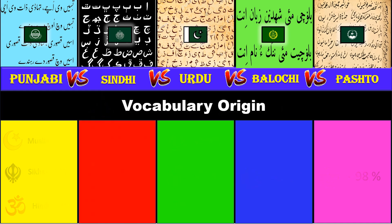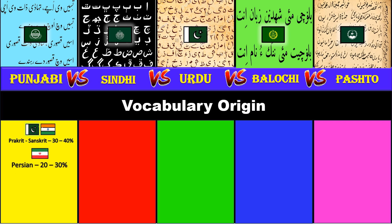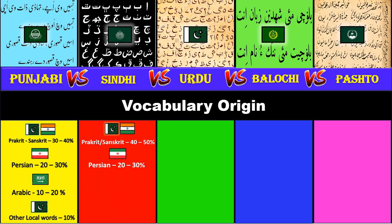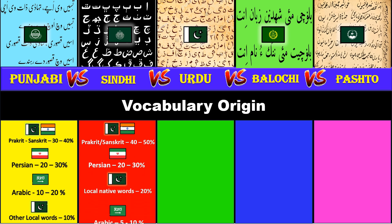Vocabulary origin. Punjabi vocabulary consists of 30 to 40 percent native Prakrit and Sanskrit, 20 to 30 percent Farsi, 10 to 20 percent Arabic and 10 percent from other local languages. For Sindhi: 40 to 50 percent native Prakrit and Sanskrit, 20 to 30 percent Farsi, 20 percent from local languages and Arabic 5 to 10 percent.